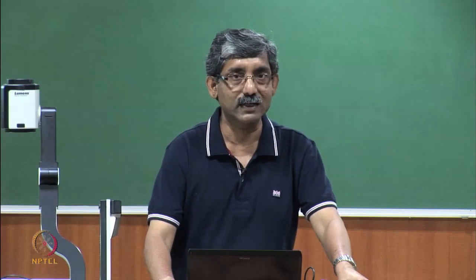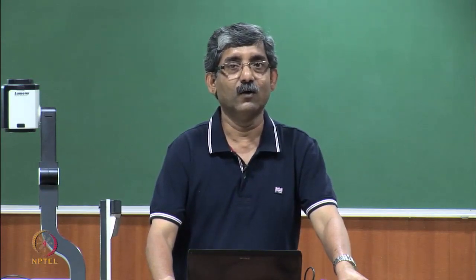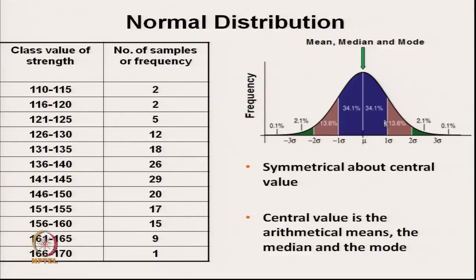What is the nature of normal distribution? At the centre, the central value is where mean, median, and mode all coincide. Mode has the maximum frequency, so maximum frequency is at the centre. The number of data on the left side and the right side of the central line are almost the same — that is why it is the median — and if we take the average value it will also be the same. In normal distribution, the central line coincides for mean, median, and mode.